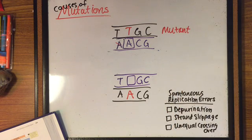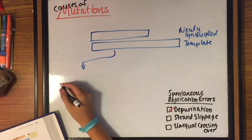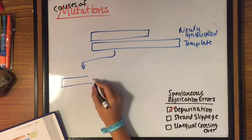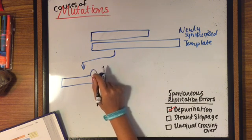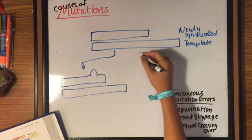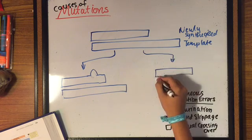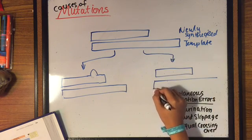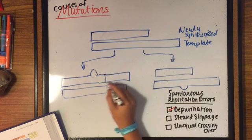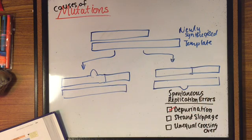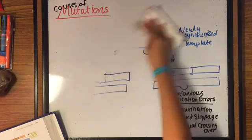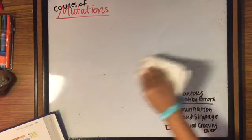A nucleotide is incorporated into the newly synthesized strand opposite the apurinic site, or the other strand. Insertions and deletions may result from strand slippage when a newly synthesized strand loops out, resulting in the addition of one nucleotide on the new strand. On the other hand, a template strand can loop out and result in the omission of one nucleotide on the new strand.